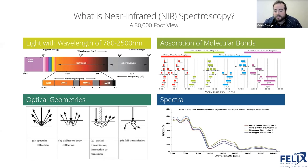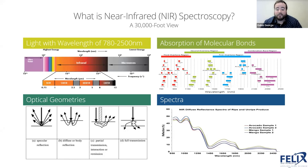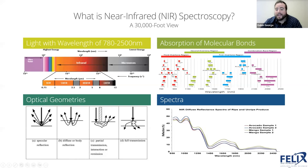With this spectral information, we can glean what kinds of chemical bonds are in the sample we're looking at. If we know what kinds of chemical bonds are present, we know what kinds of chemicals those might be associated with — such as sugars, water, different amino acids, proteins, fat, or even other micronutrients. So the technology in a hardware sense is shooting light with some kind of optical geometry into a sample to give us a spectral reading showing absorption or reflection levels of different chemical bonds, typically CH, OH, or NH bonds.